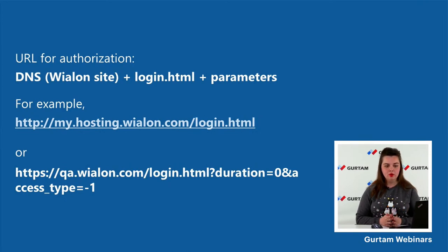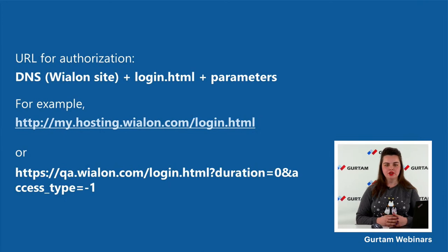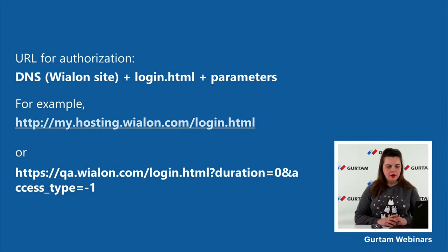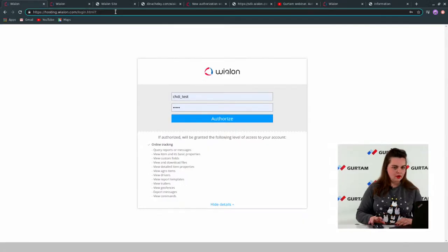Let's look at what the authorization form is. The URL for the authorization form is your DNS plus login.html, plus additional parameters. Additional parameters are optional but useful. For example: my-hosting.wialon.com/login.html, or your Vialon DNS site plus login.html. Let me show you how this looks in the browser.